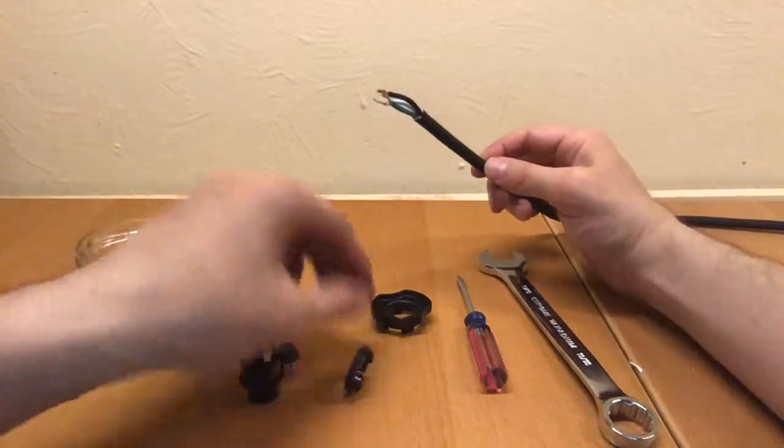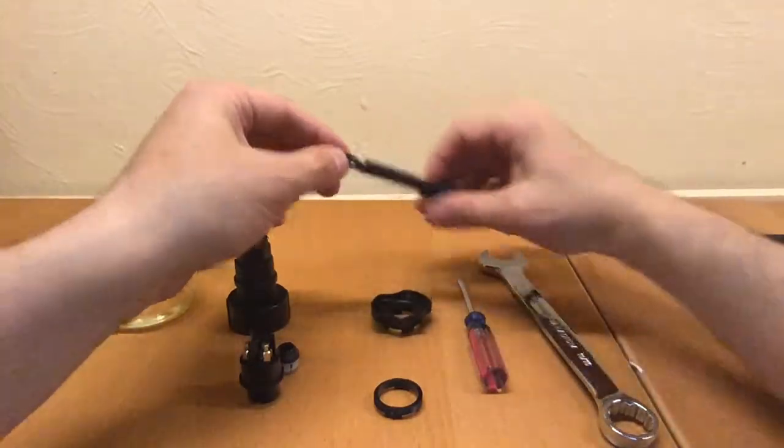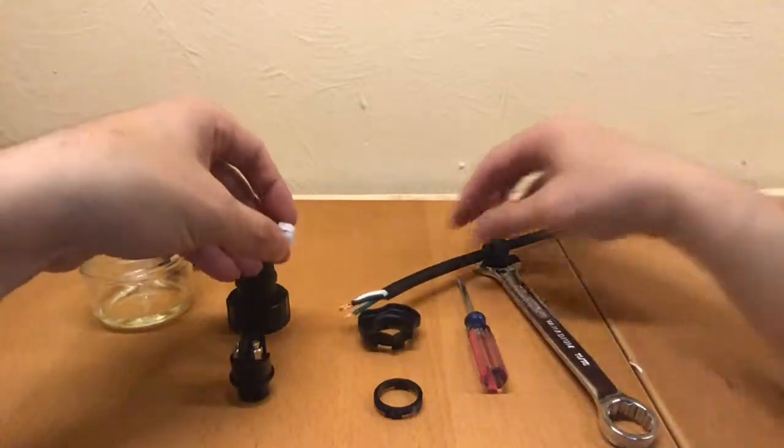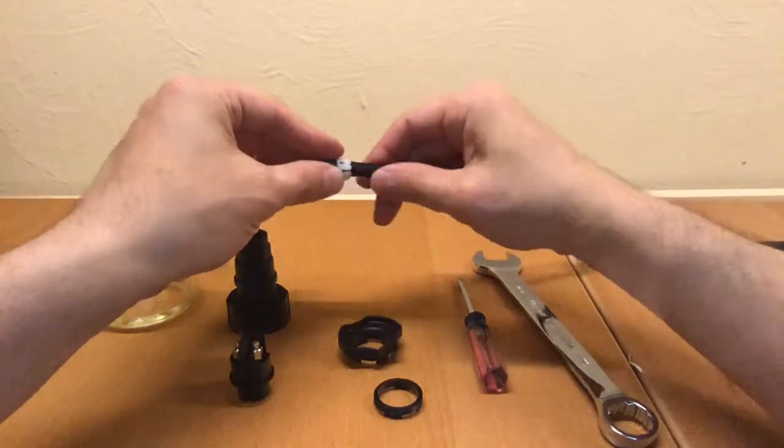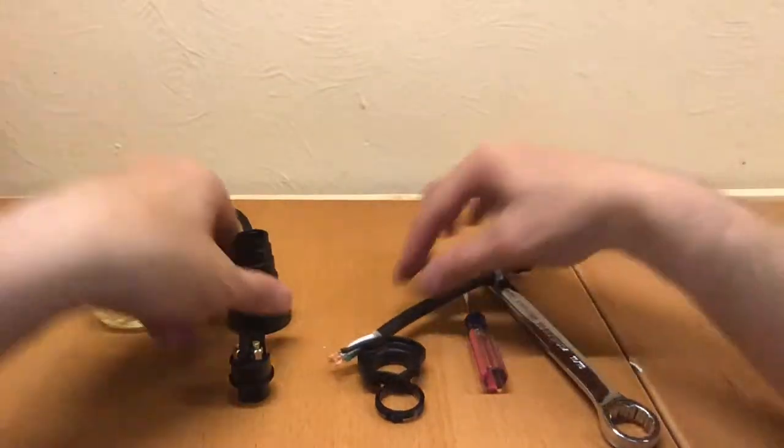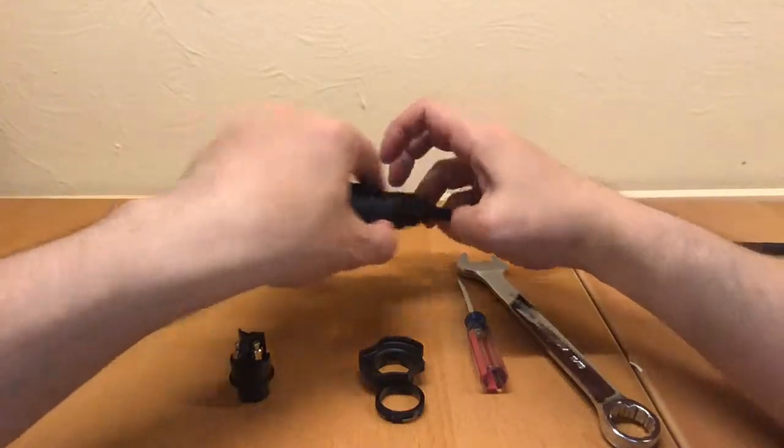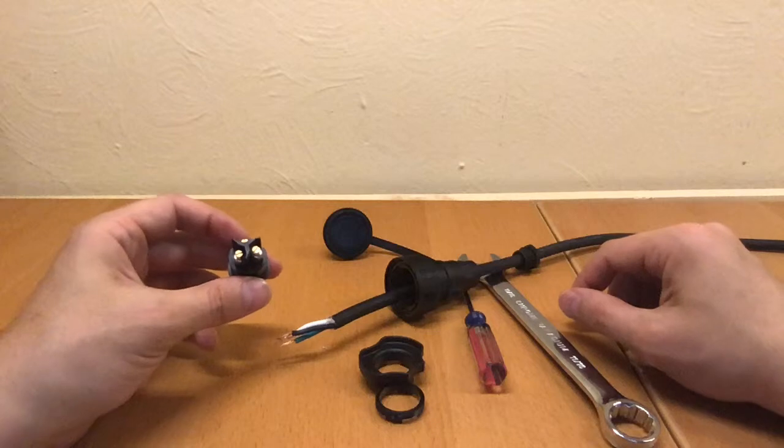So first thing we're going to want to do is actually put in reverse order basically all of the pieces we're going to need for the connector. So we're going to put the screwing bolt, we're going to put in the gland and the compressor piece. We're going to pass the enclosure through and then we're going to go screw the connectors inside the terminal.